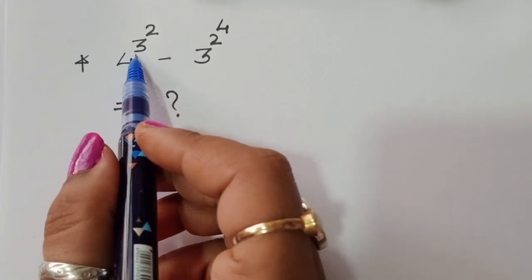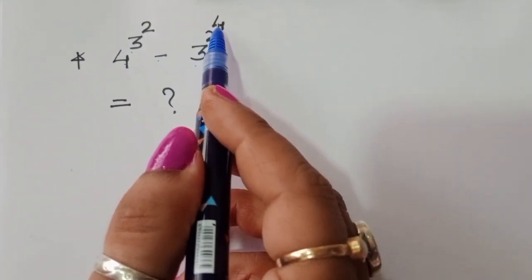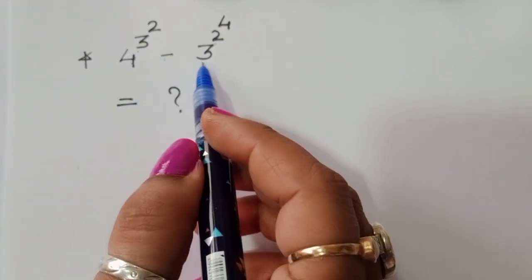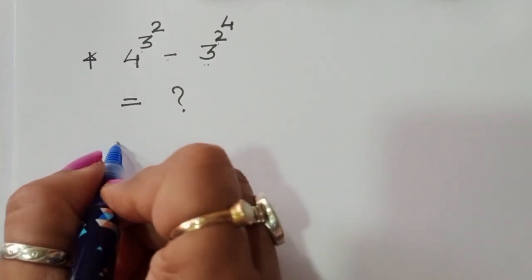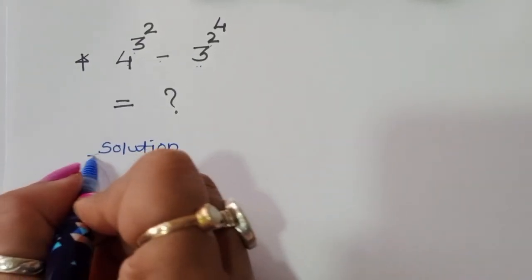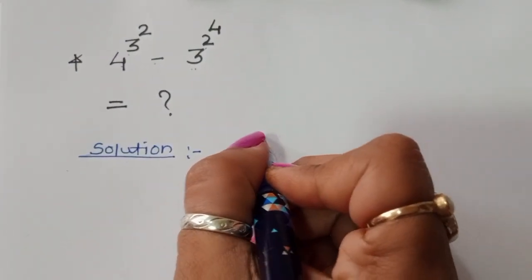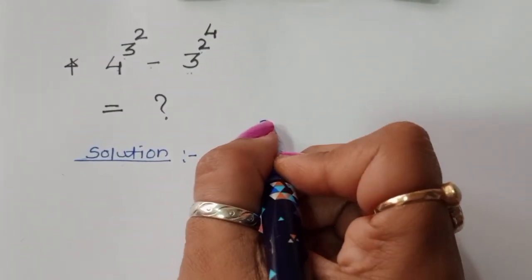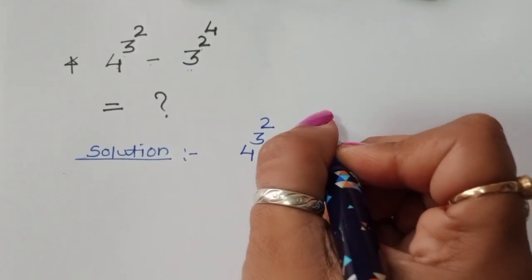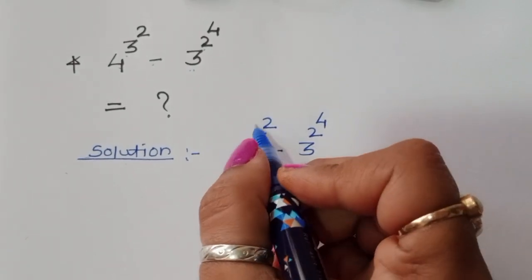The solution: given 4 power 3 power 2 minus 3 power 2 power 4, we have to find out the value of this term. Let's see the solution. We are given 4 power 3 power 2 minus 3 power 2 power 4.